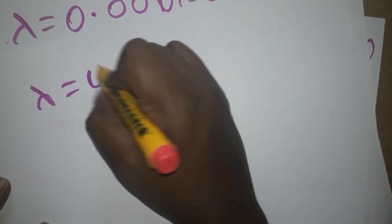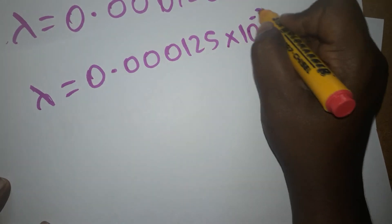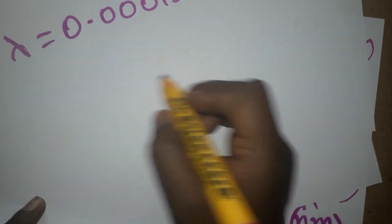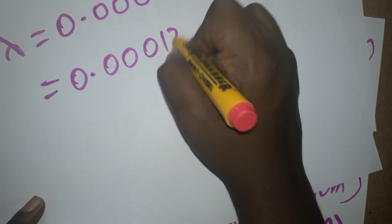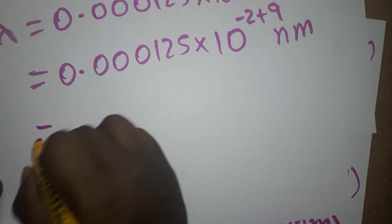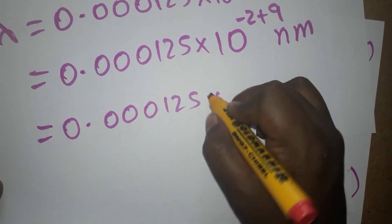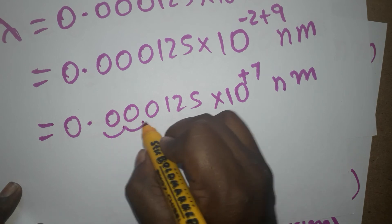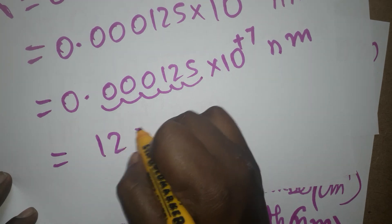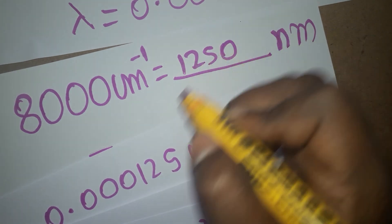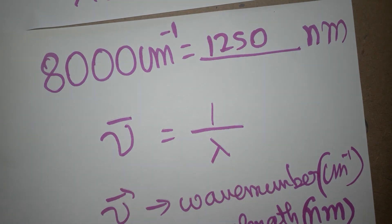So wavelength = 0.000125 × 10⁻² meter × 10⁹ nanometer per meter. This gives 0.000125 × 10⁻²⁺⁹ = 0.000125 × 10⁷ nanometer. Moving the decimal seven places: 1250 nanometers. So finally, 8000 centimeter inverse equals 1250 nanometers. If you like my channel, please subscribe. Thank you for watching.